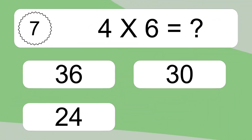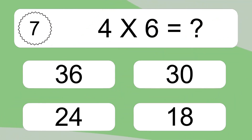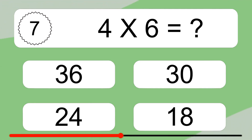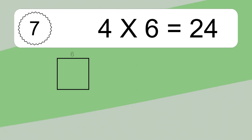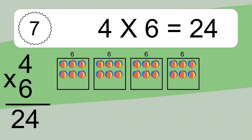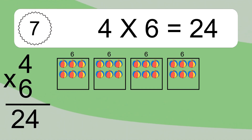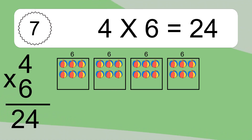4 times 6 equals what? 4 times 6 equals 24. We have 4 boxes, and each box has 6 colorful balls inside. If you count all the balls in all the boxes together, you will have 4 times 6 balls. This equals 24 balls.